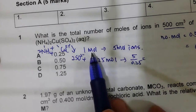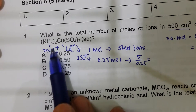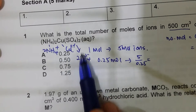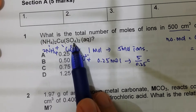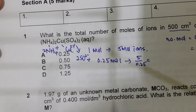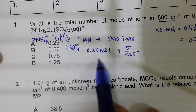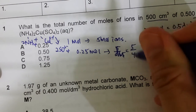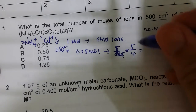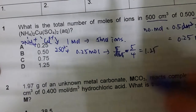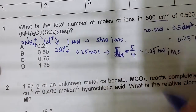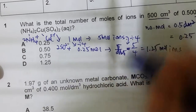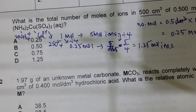For every one mole of this compound there are 2 moles of ammonium ion, 1 mole of copper(II) ion, and 2 moles of sulfate ion — so 5 moles of ions per mole of compound. Since you have 0.25 mol, multiply: 5 × 0.25 = 5/4 = 1.25 moles of ions total.